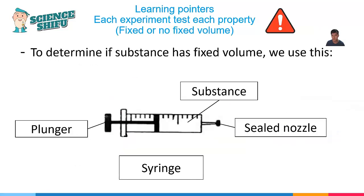Then what about the other property? How to determine if the object has a fixed or no fixed volume? To determine if a substance has a fixed volume, we will need to use a syringe.